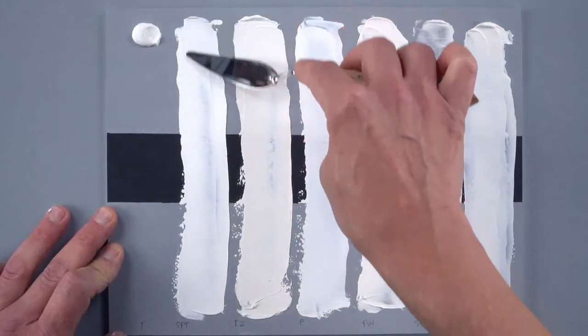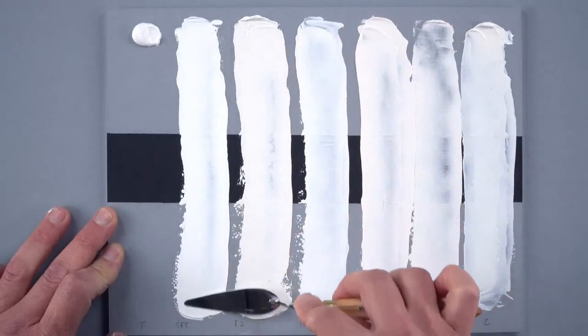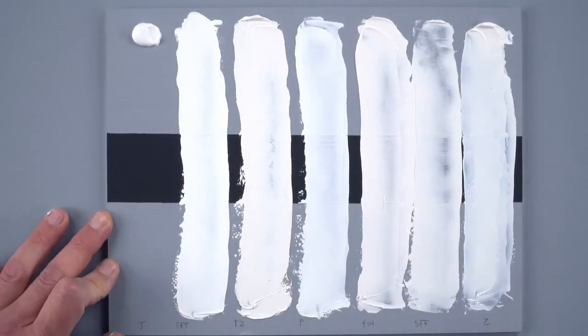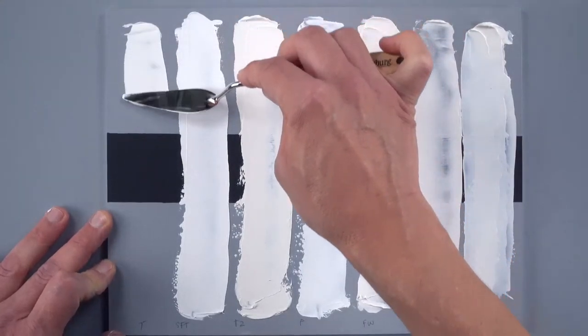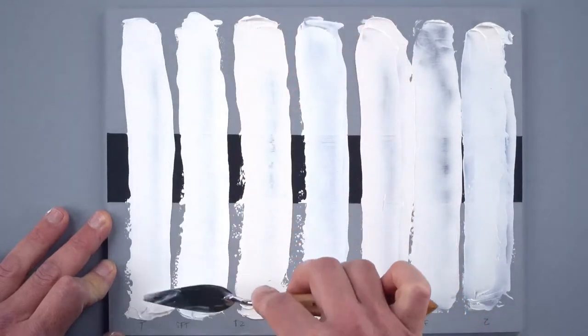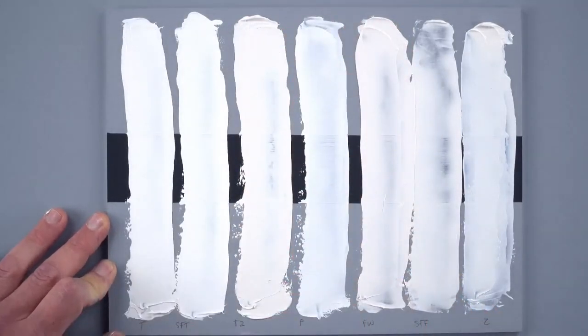This is safflower titanium white. Mmm, lovely. One thing to think about with the safflower colors, and I'm talking about the safflower titanium white, the porcelain, and the safflower flake.